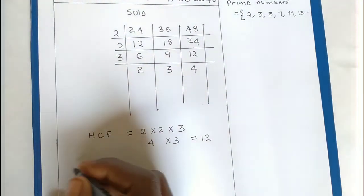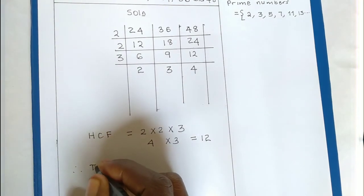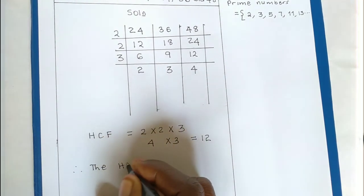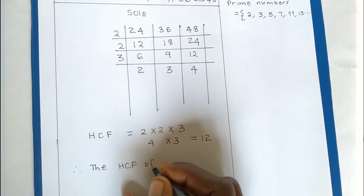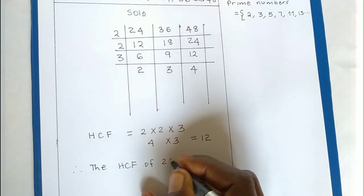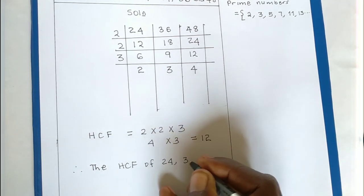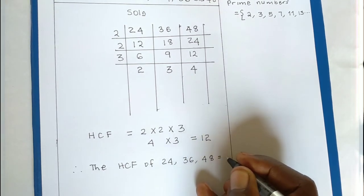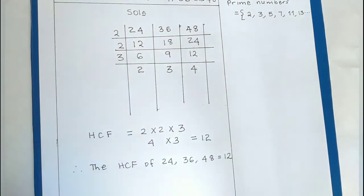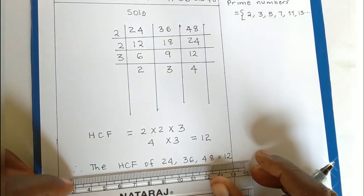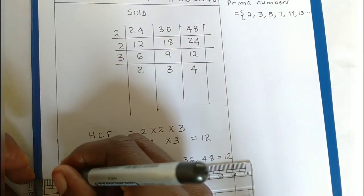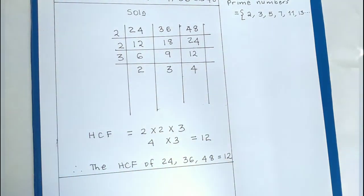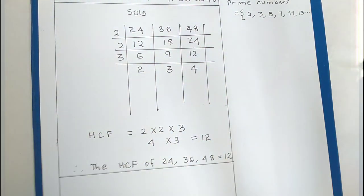Therefore, the HCF of 24, 36, and 48 is equal to 12. Thank you so much for watching this tutorial. Don't forget to like, subscribe, or comment on my videos. Thank you very much.